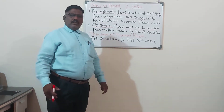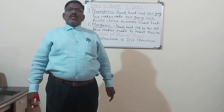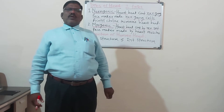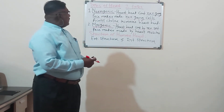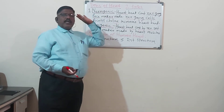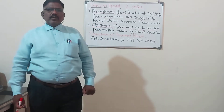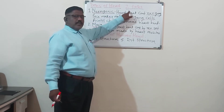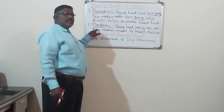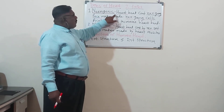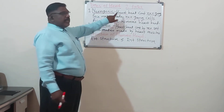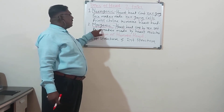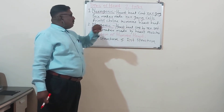Heart specialists are called cardiologists because the word 'cardiac' is related to the heart, and the muscles of the heart are called cardiac muscles. To conclude the two types: neurogenic heart — heartbeat is controlled by nerve ganglia, pacemaker is made up of nerve ganglionic cells, and acetylcholine increases the heartbeat. Myogenic heart — heartbeat is controlled by the nervous system, and the pacemaker is made up of heart muscles.